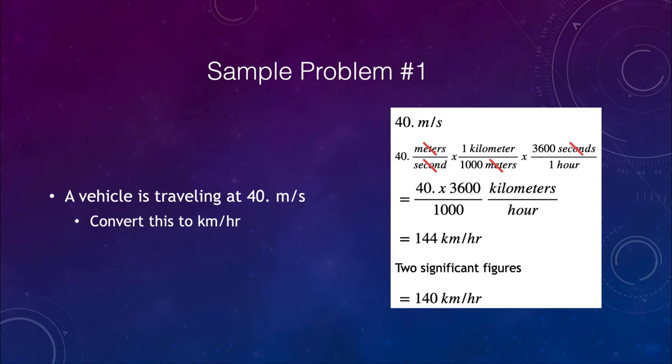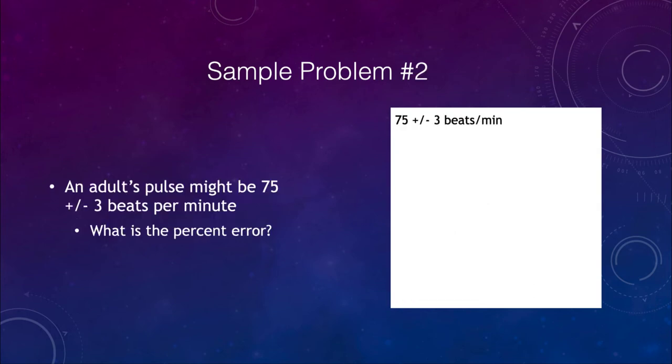Now let's look at our second sample problem, which looks at a pulse rate. If an adult's pulse rate was 75 plus or minus three beats per minute, we want to find the percent error. If you remember, our percent error is given by the equation that the percent uncertainty equals the change in the value, the error in the value, divided by the expected value, multiplied by 100%.